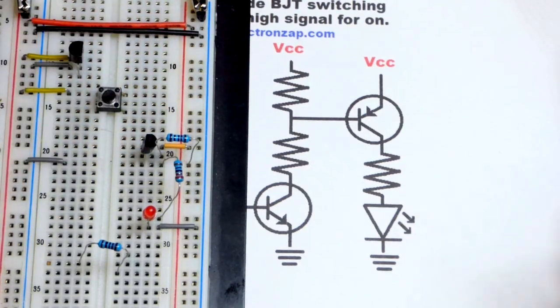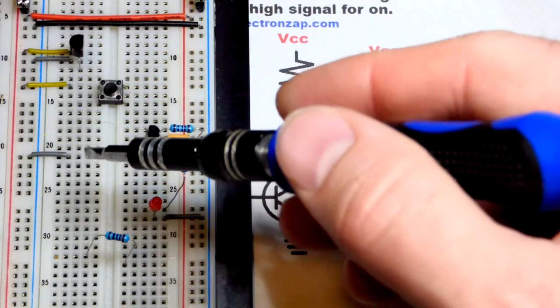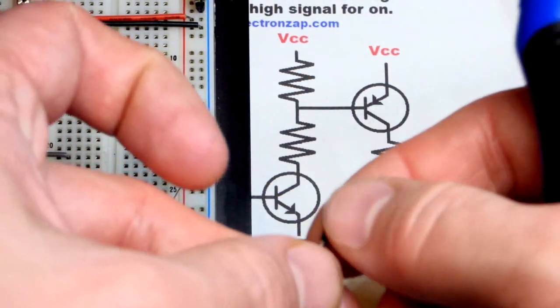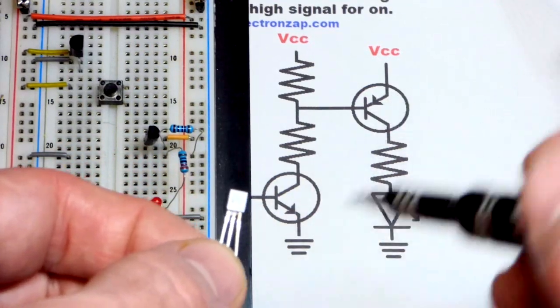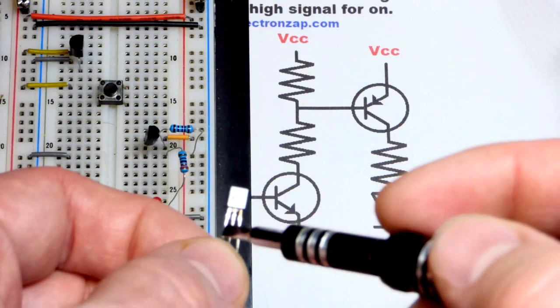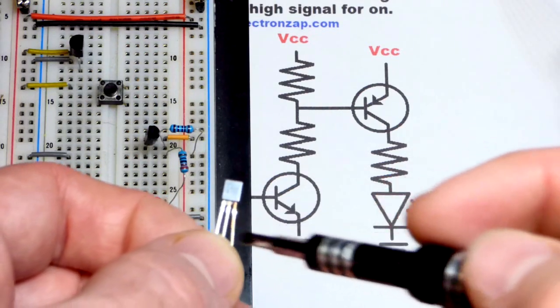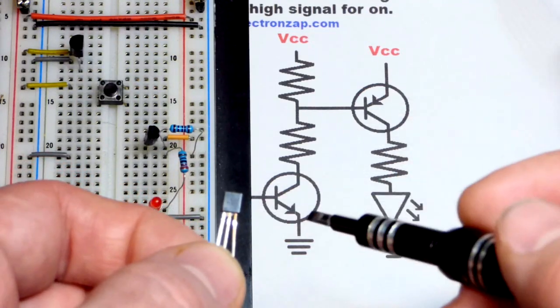Now we need an NPN bipolar junction transistor switch. We'll put it on this side of the board. Again, 2N3904 - the NPN version of the 2N3906, a very common transistor. Left pin is the emitter, middle pin is the base, right pin is collector. Pin layout is the same, just the chemistries are opposite.